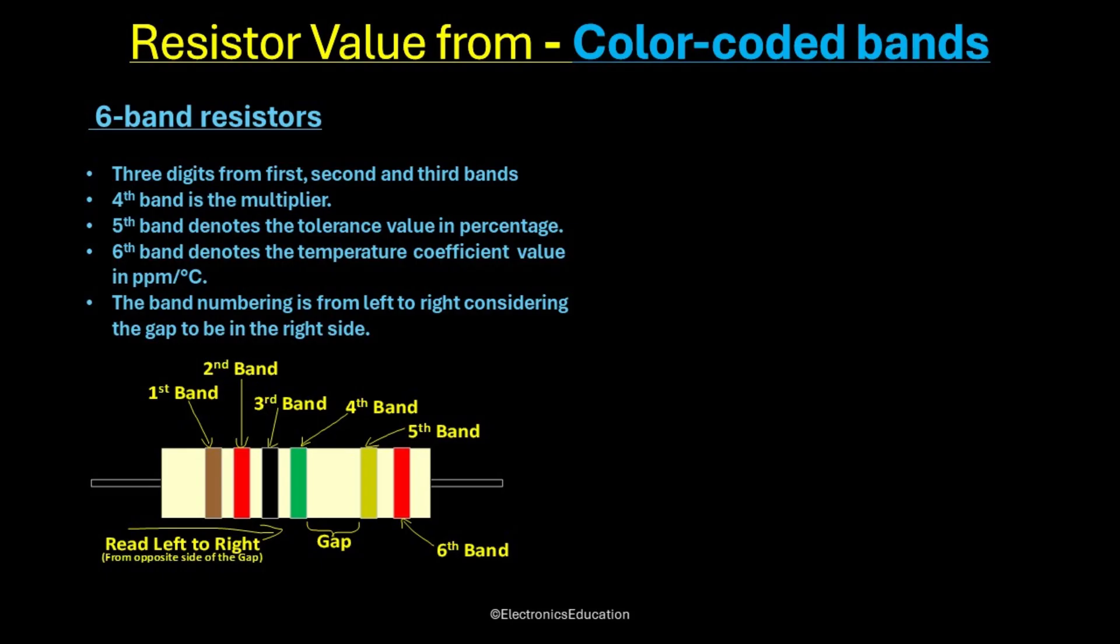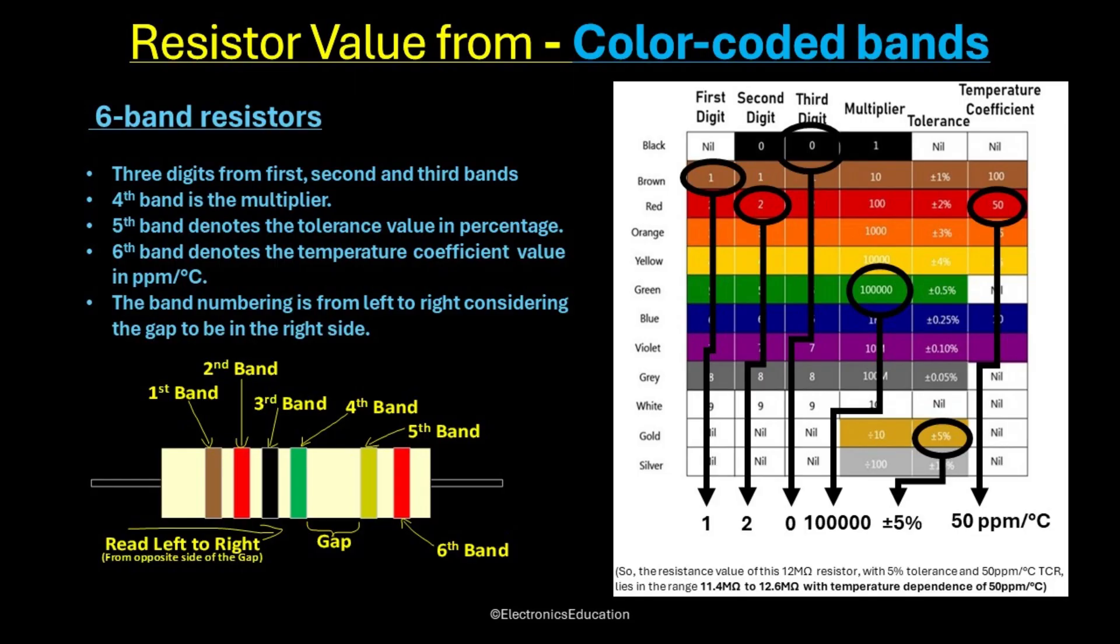So in this example, the bands are brown, red, black, green, gold, and red. Thus, the resistor value becomes 12 megaohm with 5% tolerance and TCR of 50 ppm per degree centigrade.